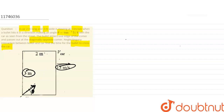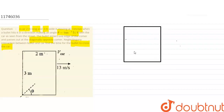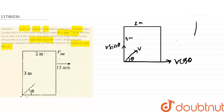Now I am going to draw this diagram. This is a rectangle representing the car. This distance is 2 meters and this distance is 3 meters. The angle theta is shown here. The velocity components are: the horizontal component is V cos theta and the vertical component is V sin theta, along the X axis and Y axis respectively.